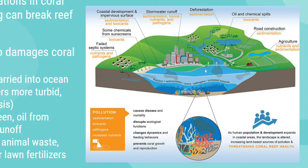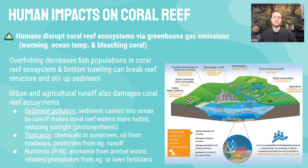Finally, nutrients such as ammonia from CAFOs, nitrate-containing fertilizers from lawns or golf courses, and phosphates from detergents in poorly treated sewage or from fertilizers all drain into coral reef ecosystems. These three types of pollutants — sediment, toxicants, and nutrients — are especially harmful to coral reef ecosystems.